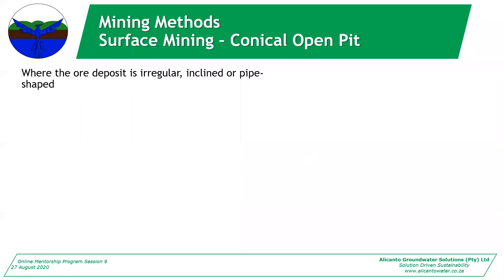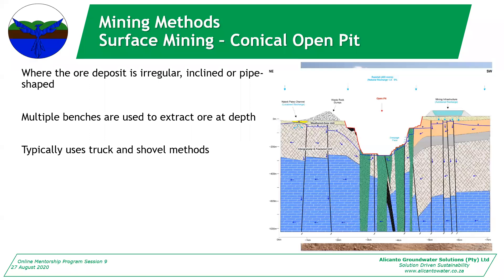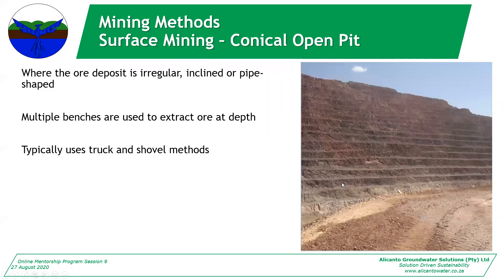The last kind of surface mining is a conical open pit, where your ore deposit is irregular, inclined or pipe-shaped. A common pipe-shaped deposit would be kimberlite. Diamond mines often have multiple benches in a corkscrew pattern going straight down, like where you've got kimberlite pipes going down in a conical shape, getting narrower and narrower as you go down. Typically you use a truck and shovel method, with benches between three and five meters high.